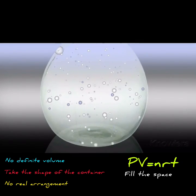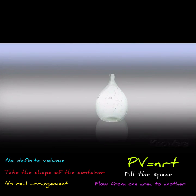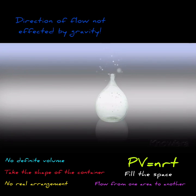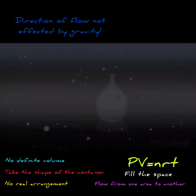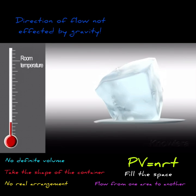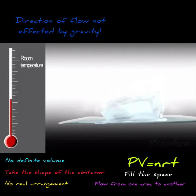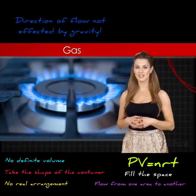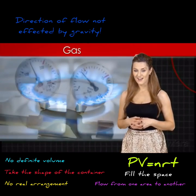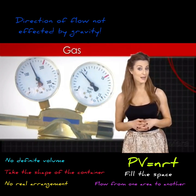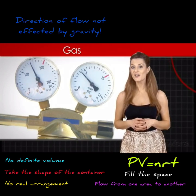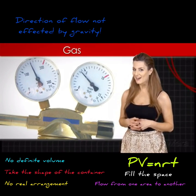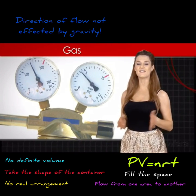Third, gases can flow from one area to another, although the direction of flow is not directly affected by gravity. This ability to flow means they are sometimes referred to as fluids. Last, gases have melting points and boiling points that are below room temperature. For the most part, we are unable to see gases because of the space between their particles. Scientists have to use characteristics like pressure, volume, number of particles per unit area, and temperature to discuss and identify them.